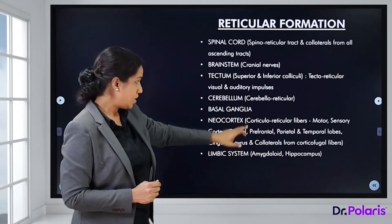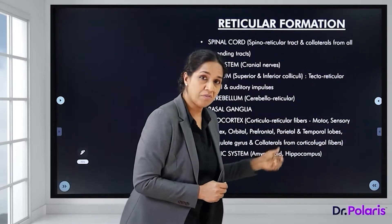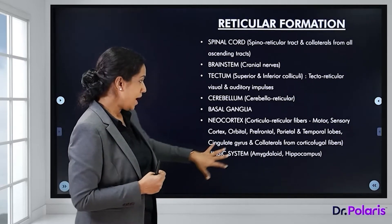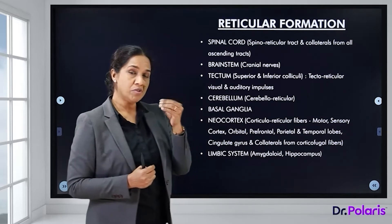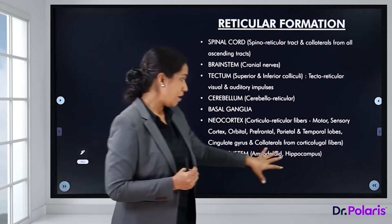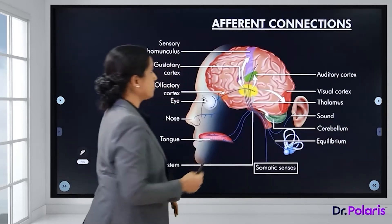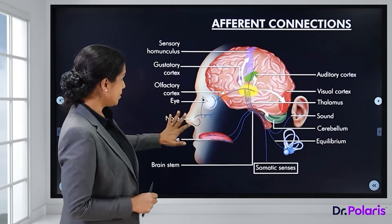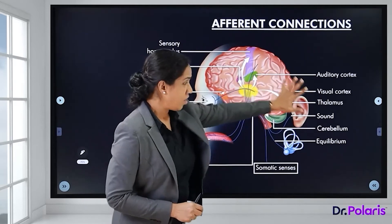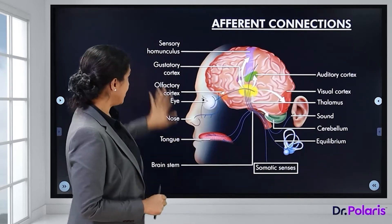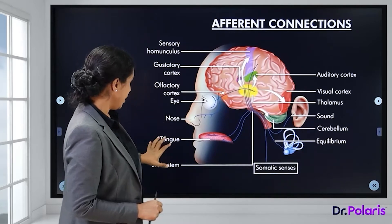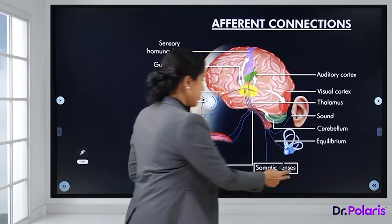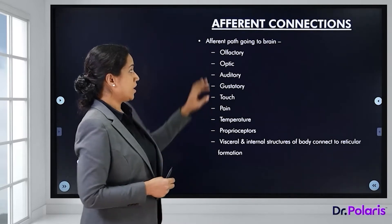The neocortex sends inputs from various areas to the reticular formation, and the limbic system also contributes inputs from the amygdaloid and hippocampus complex. All sensory modalities — olfactory, optic, auditory, gustatory, touch, pain, temperature, proprioceptors, visceral, and internal body structures — are connected to the reticular formation.